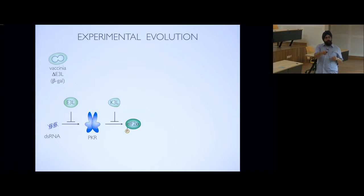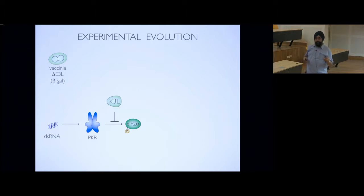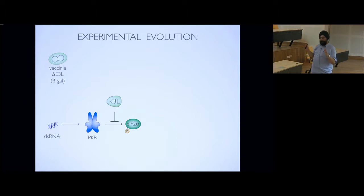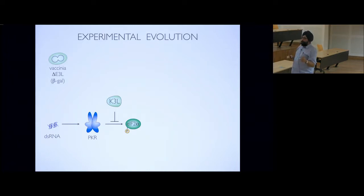This makes sense because, if these are arms races, vaccinia cannot rely on K3L alone winning against PKR. They've gone after PKR in two ways. In the laboratory, we can easily delete E3L and put all of the evolutionary pressure on K3L. We had already described that K3L from vaccinia — a model pox virus — is ineffective against human PKR. It's very effective against mouse, hamster, and gibbon PKR, but just not very good against human PKR.